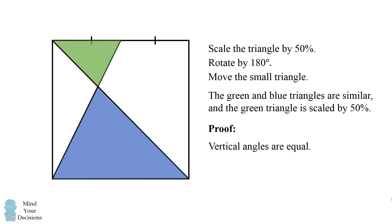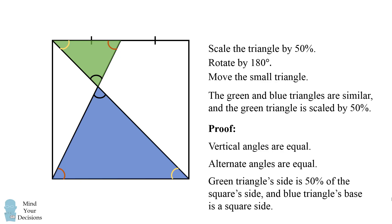Notice that vertical angles are equal. Alternate angles are also equal because the two sides of the square are parallel to each other. Furthermore, the green triangle's side is 50% of the square side, and the blue triangle's base is a square side. Therefore we get a scaling factor of 50%.